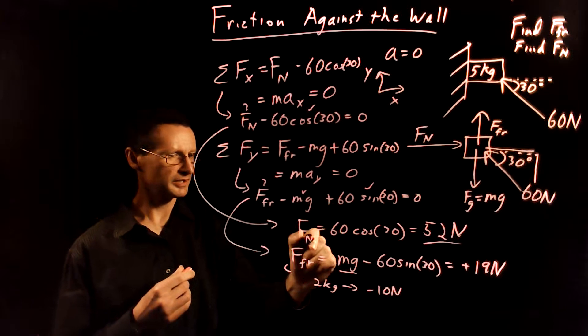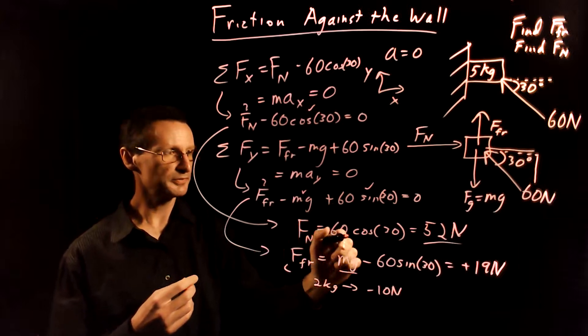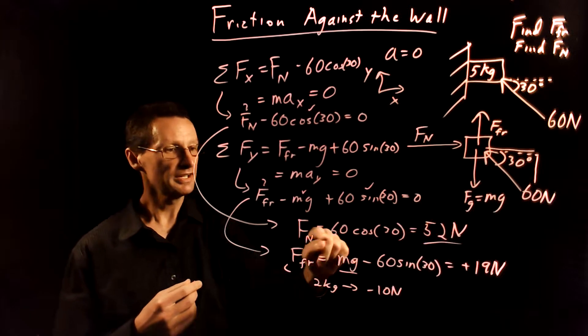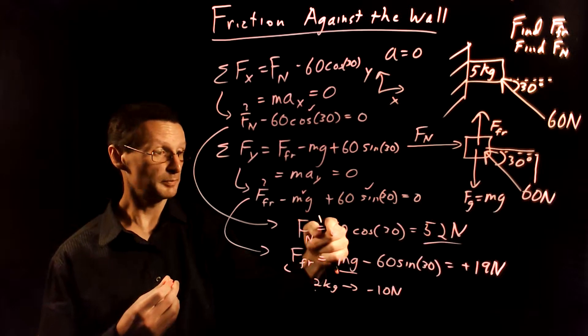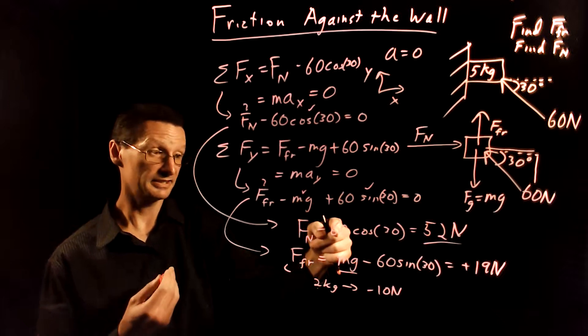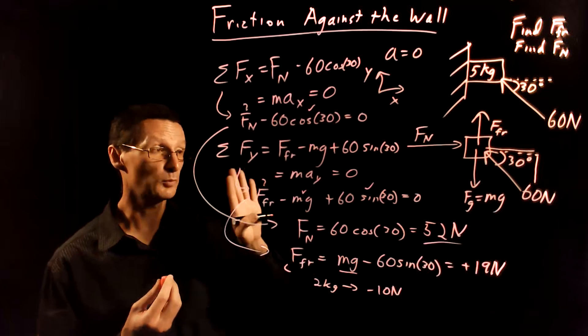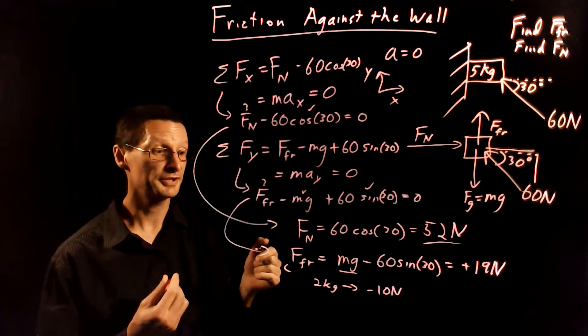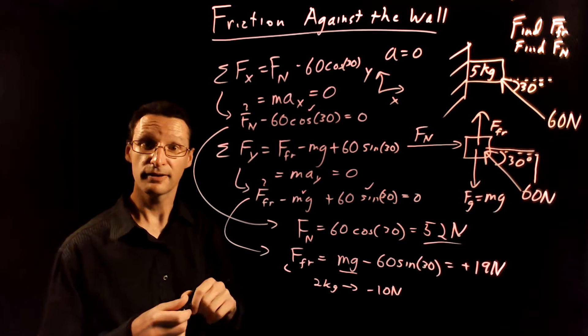This term here the normal force here tells us that if I increase the value of this push force so if I push harder on it then the normal force is going to also increase right so if I make it 60 like maybe let's say I double it to 120 then this is also going to double which makes intuitive sense right the wall is going to push back harder if I push harder. Okay so I think I've done my sanity check and that's it for this problem.